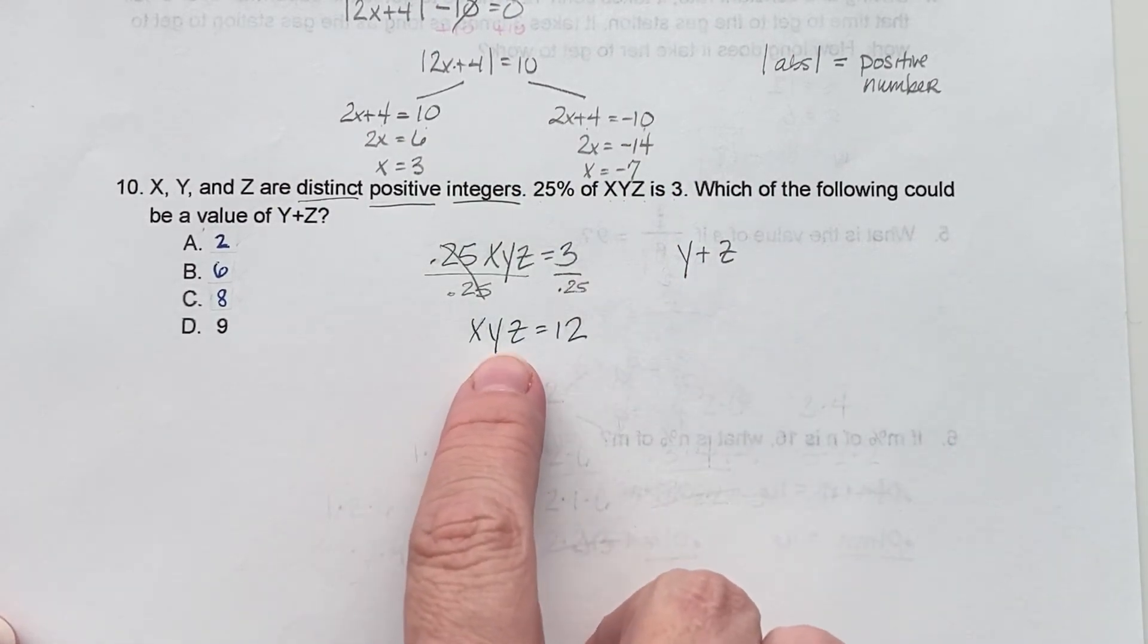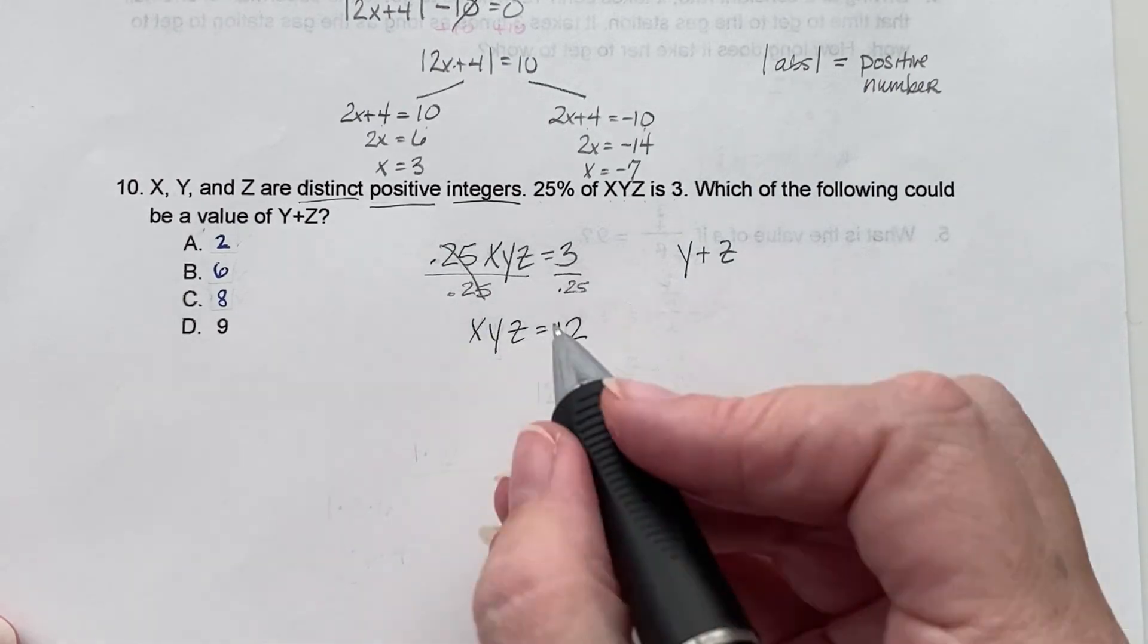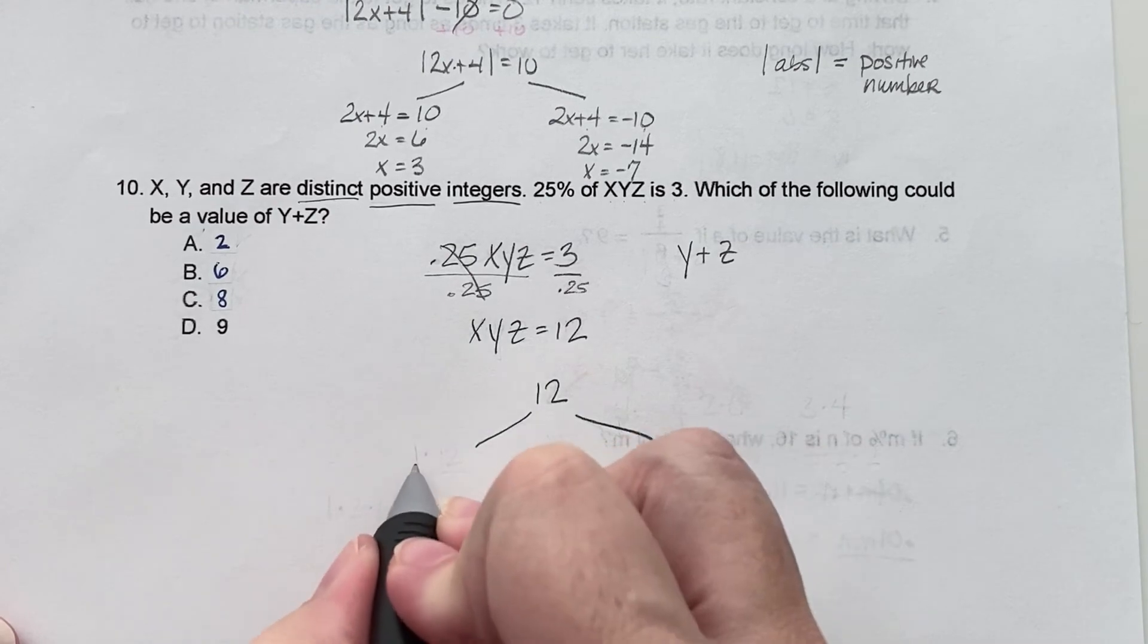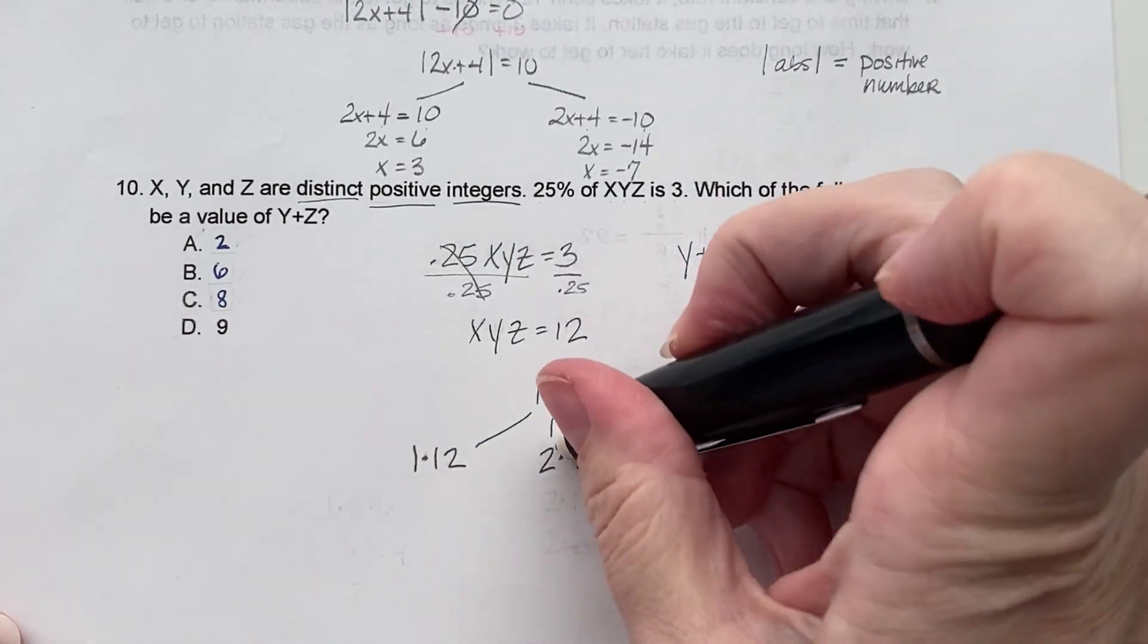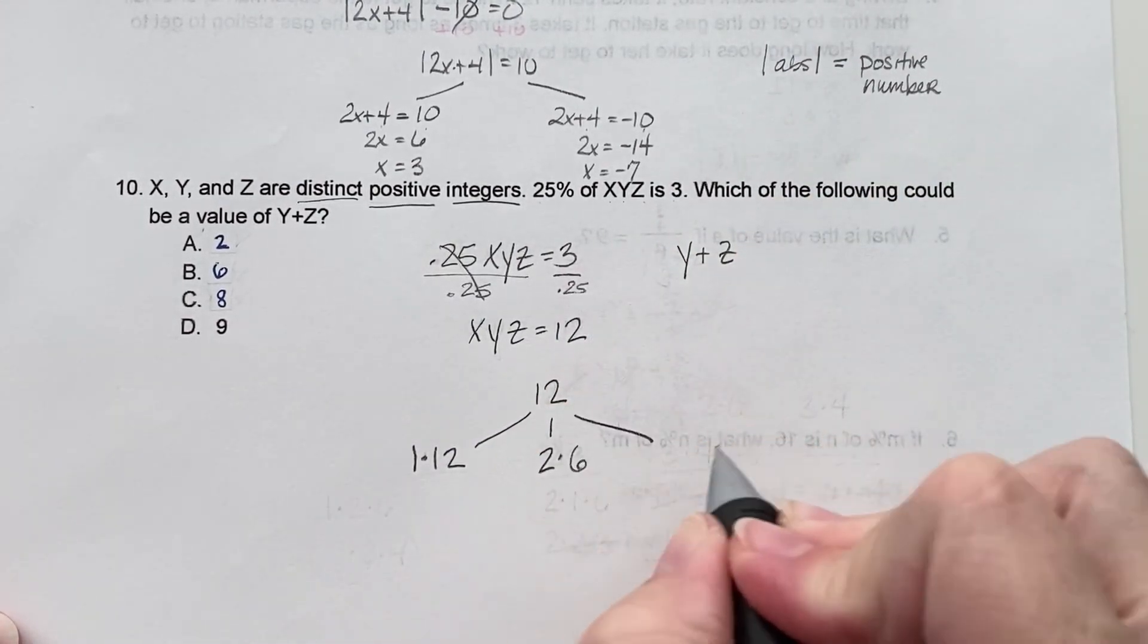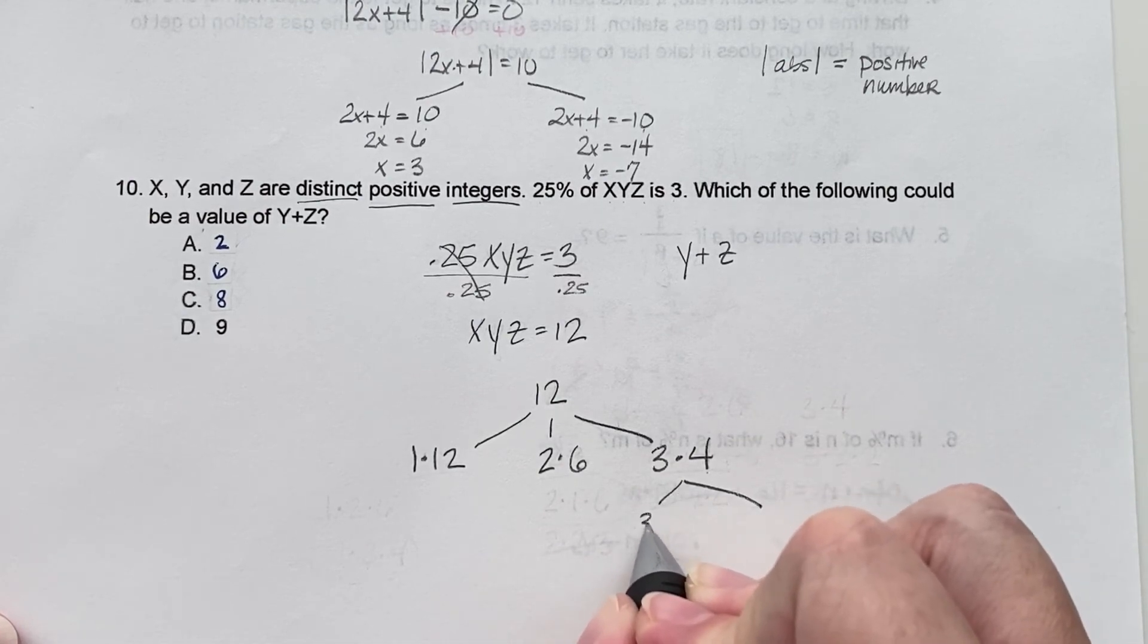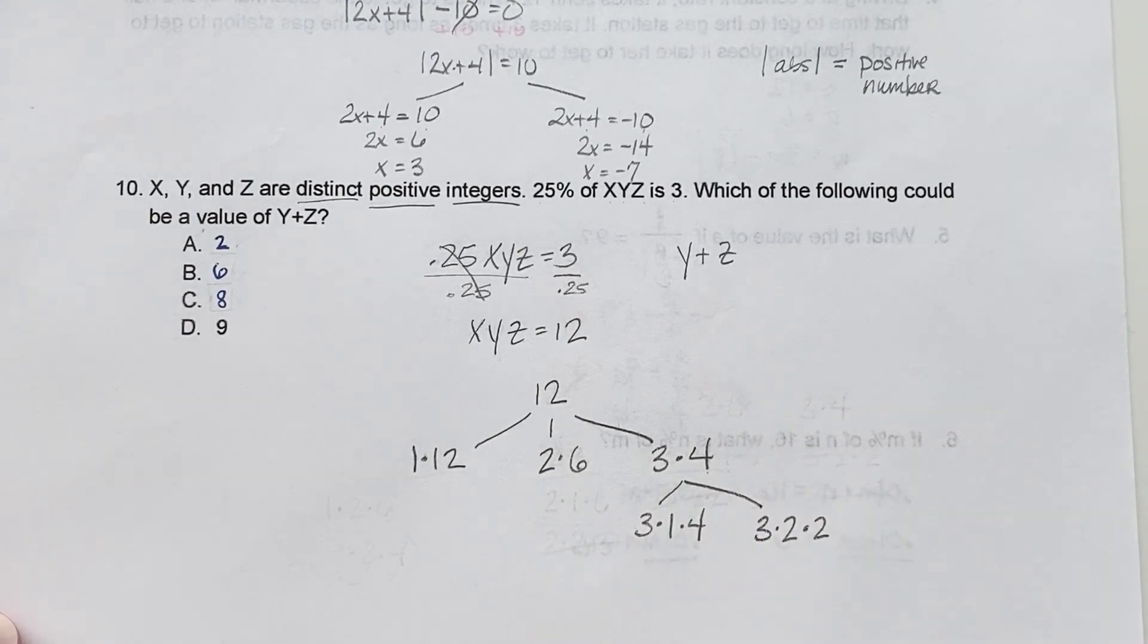So now what three numbers, distinct positive numbers can we multiply together to get 12? So first let's look at all the different possibilities of finding 12. So we have 1 times 12, 2 times 6, and 3 times 4. Now how do we get 4? Well, we can do 3 times 1 times 4 and 3 times 2 times 2, which since they need to be distinct integers, we can't actually use this 3 times 2 times 2. So that goes away.